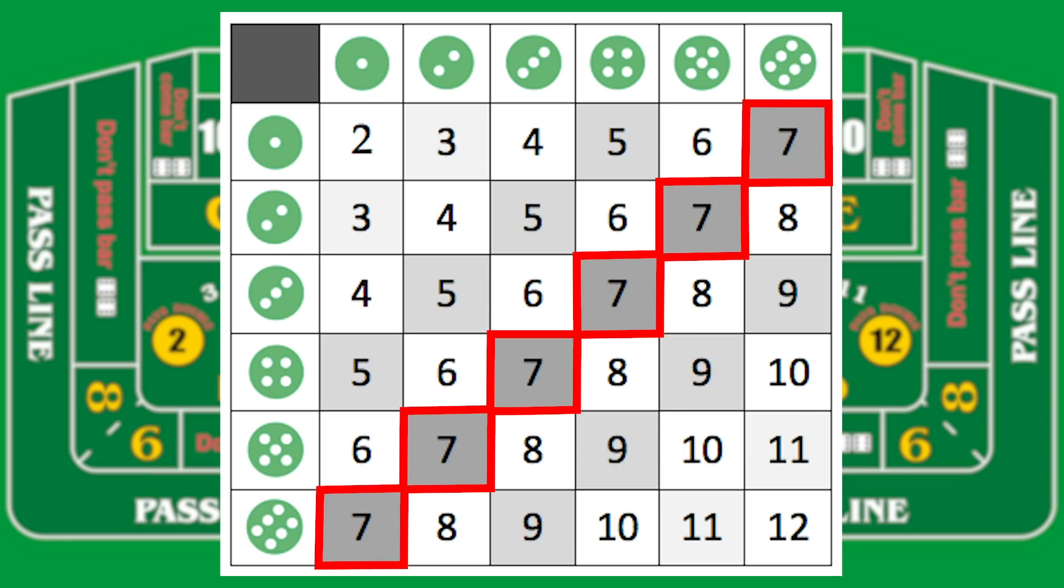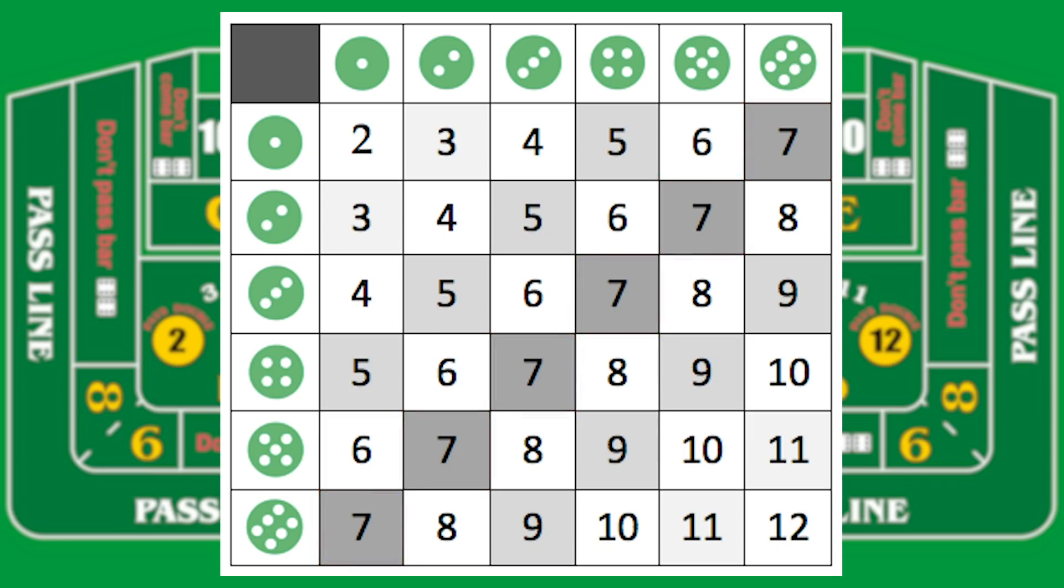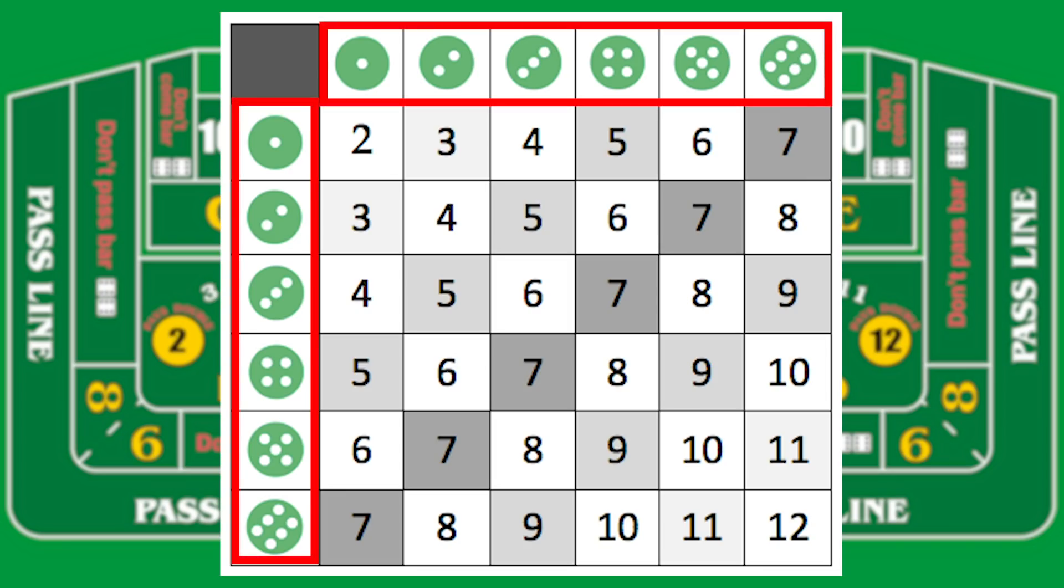Now, decades ago, this question was asked. Could we relabel the two dice in some different way, with only integer faces still, such that the probability distribution remains the exact same? As in, could we change these numbers, and in the end still have a 1 out of 36 chance of rolling a 2, and 2 ways out of 36 to get a 3, and so on?